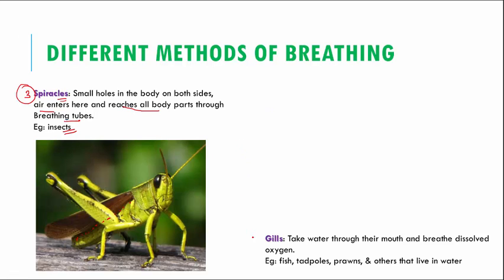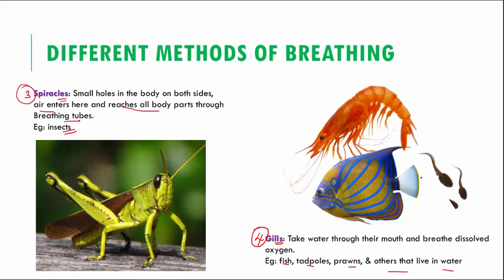The fourth one is through gills. So this is the last method of breathing called gills. Gills help in breathing underwater. So these gills help in taking dissolved oxygen which is present in water. Which are the animals that use gills? They are fish, tadpoles, prawns, and others which live in water. So we have all of them here. This is the tadpole, this is prawn, and we have fish. These three animals breathe with the help of gills underwater.